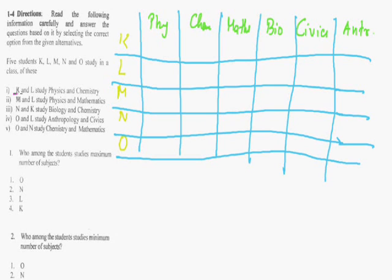The first direction is K and L study Physics and Chemistry. This means K studies Physics and Chemistry, L studies Physics and Chemistry. M and L study Physics and Maths. So M studies Physics and Maths, L also studies Physics and Maths. Now N and K study Bio and Chemistry, so Bio and Chemistry for N and same for K. Chemistry is already there for K, so Bio.